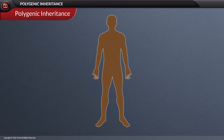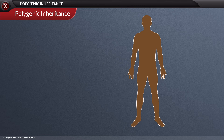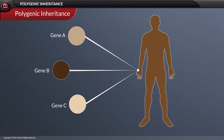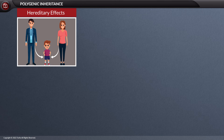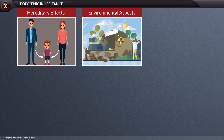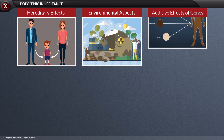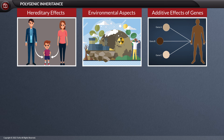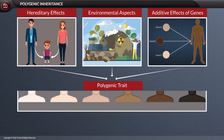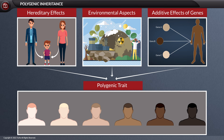Hence, in polygenic traits, multiple genes work together convergently to produce a single phenotype. We have to know that both hereditary and environmental aspects, along with the additive effect of two or more genes, contribute to the production of grades of phenotypes for a polygenic trait to be expressed.